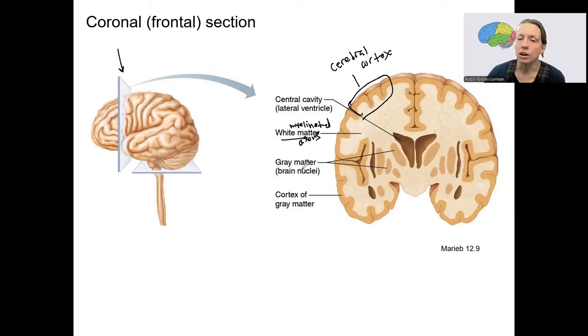The gray matter are brain nuclei. So gray matter is those things there, but also the very edge of the cortex here. The cortex of gray matter.